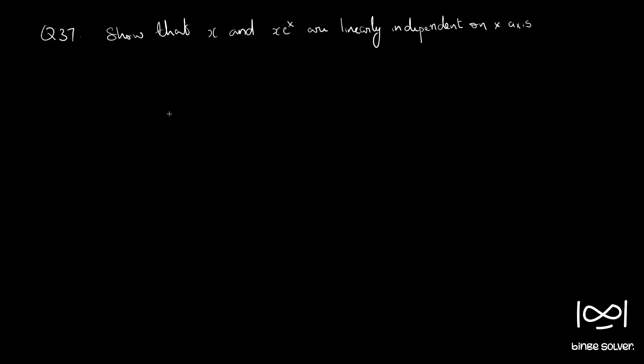So next question is, question 37, show that x and x e raised to x are linearly independent on x axis. So we have y1(x) as x and y2(x) as x e raised to x.